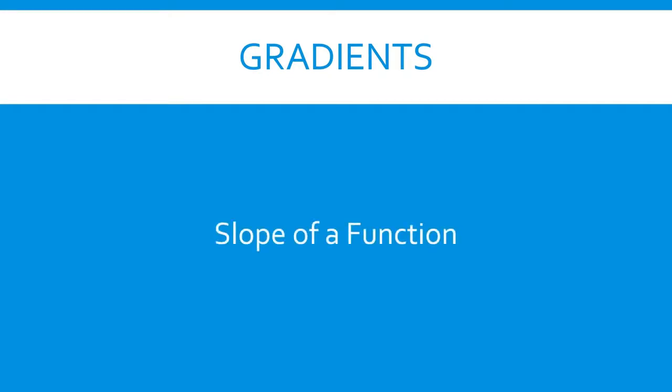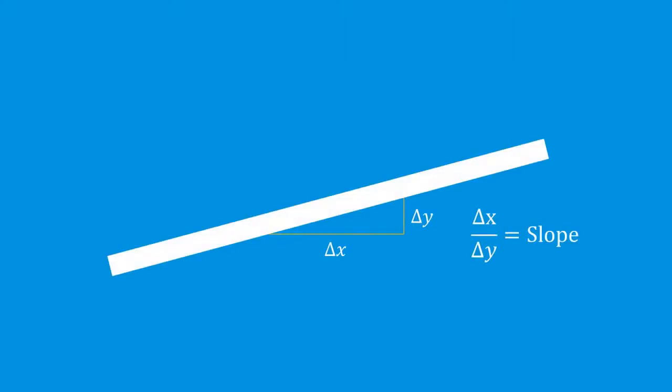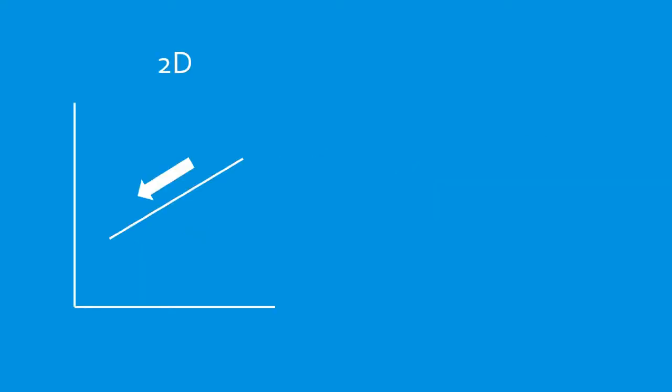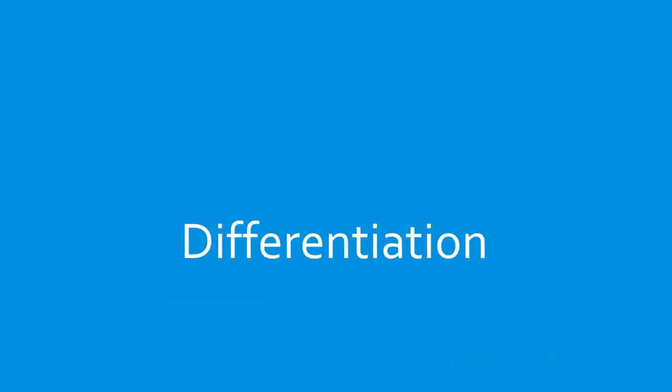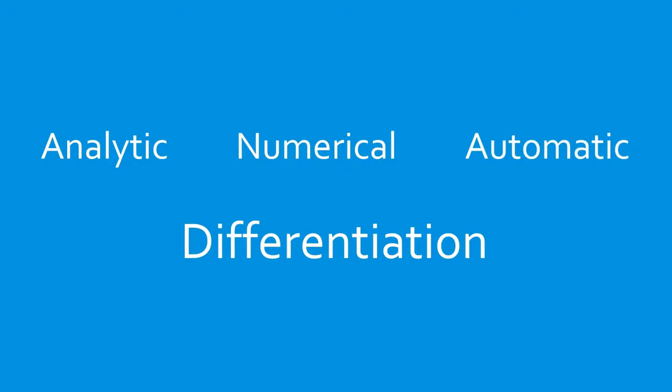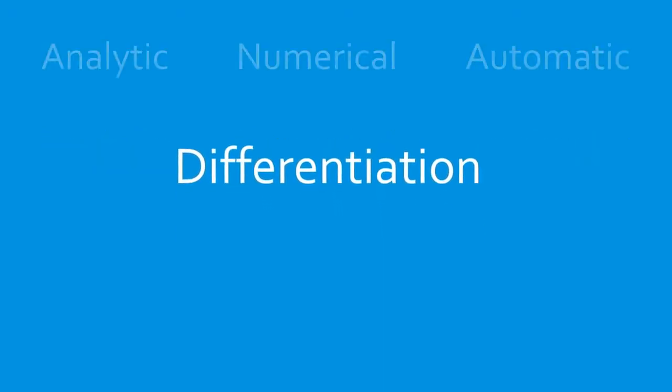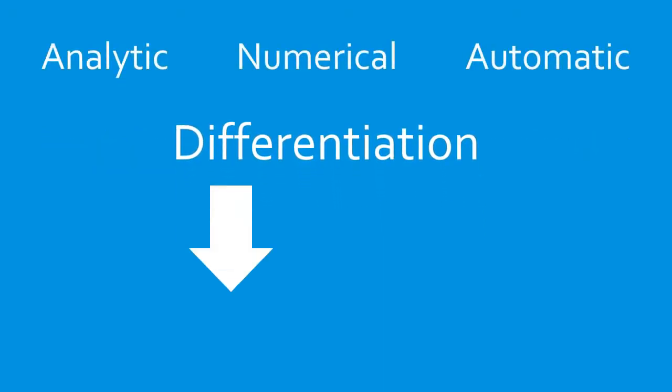Derivatives and gradients describe the slope of a function, whether it increases or decreases in a given direction. In multiple directions, or dimensions, this is called the gradient. Finding gradients for a function is an important part of optimization and can be accomplished in a number of ways including analytic differentiation, numerical differentiation, and automatic differentiation. Most optimization packages include methods for finding function gradients.